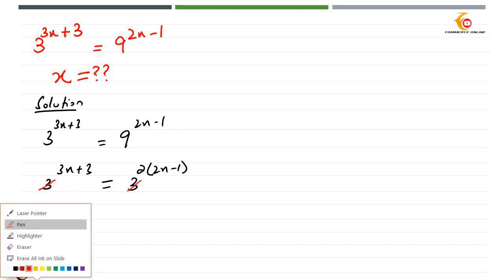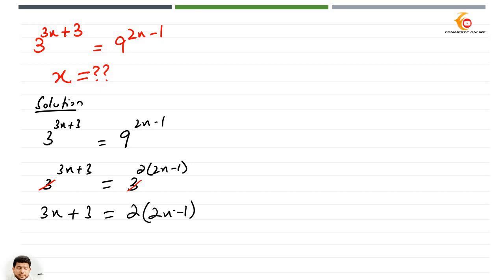So what we're going to have is 3x plus 3 equals 2 times (2x minus 1). And now 3x plus 3 equals 4x minus 2.